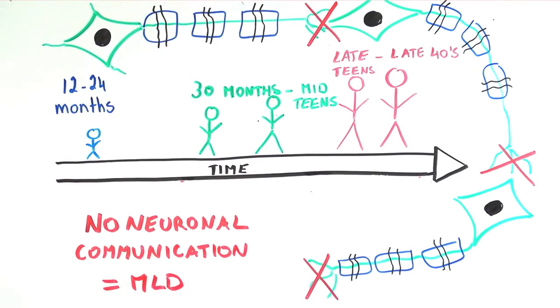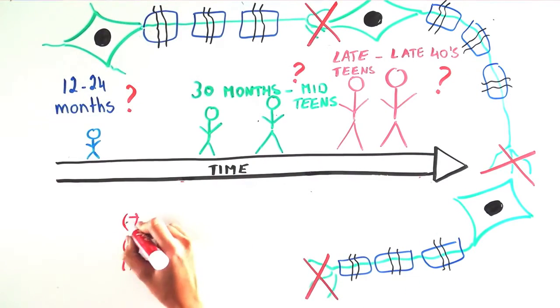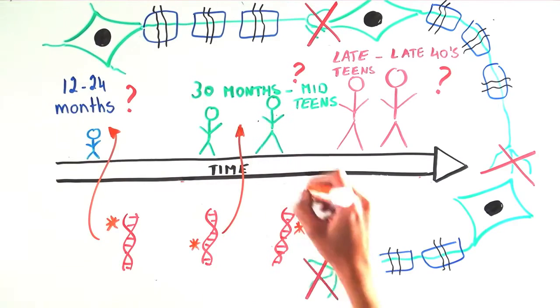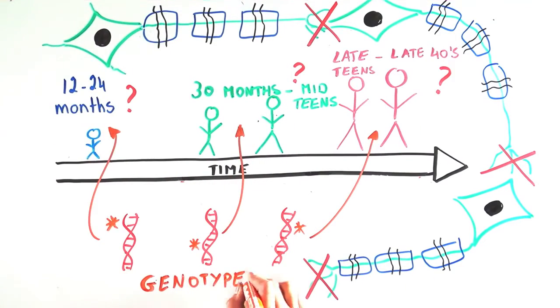Despite this same underlying biology, we don't know why someone would develop one clinical subtype of MLD versus another. We want to understand the relationship between the type of mutation, or genotype, to the symptom, or phenotype, to understand this more.